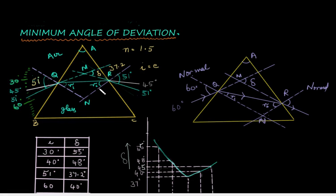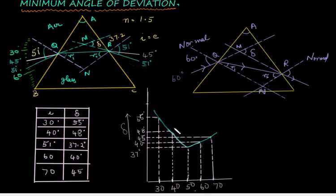For other angles of incidence the angle of deviation was different. For 30 degrees of incidence the angle of deviation was 55 degrees; for 40 degrees it was 48 degrees; for 51 degrees it was 37.2 degrees; for 60 degrees it was 40 degrees, which is slightly more than the minimum; and for 70 degrees of incidence the deviation was 45 degrees.